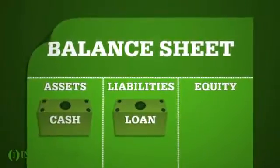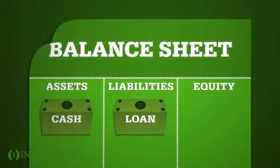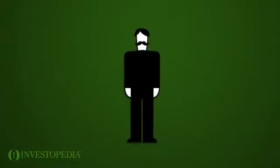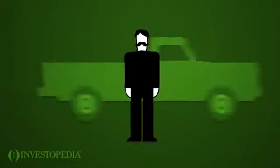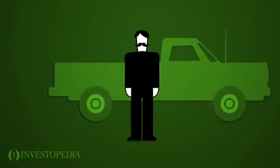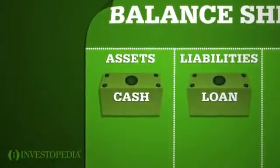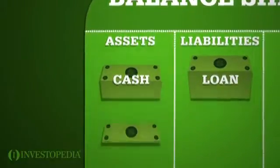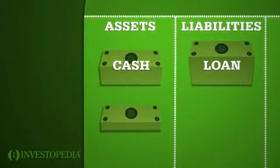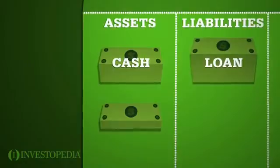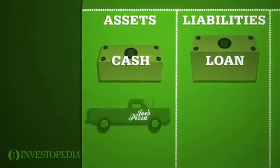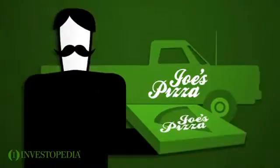The balance sheet remains in balance. Joe uses the cash to buy a truck and start his own pizza delivery service. His cash assets decrease, but that's balanced by an increase in his other assets — a new truck.